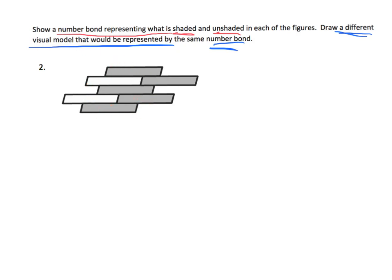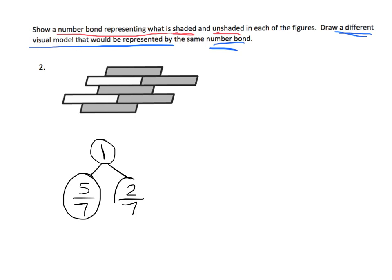Our whole has been broken up into sevenths. And the shaded — one, two, three, four, five — so the shaded is five sevenths, while the unshaded is two sevenths. They're also asking us to draw a different visual model that would go with this number bond: five sevenths shaded, two sevenths unshaded.